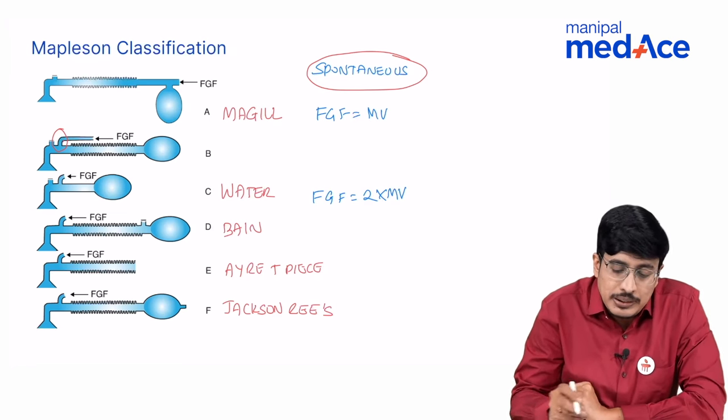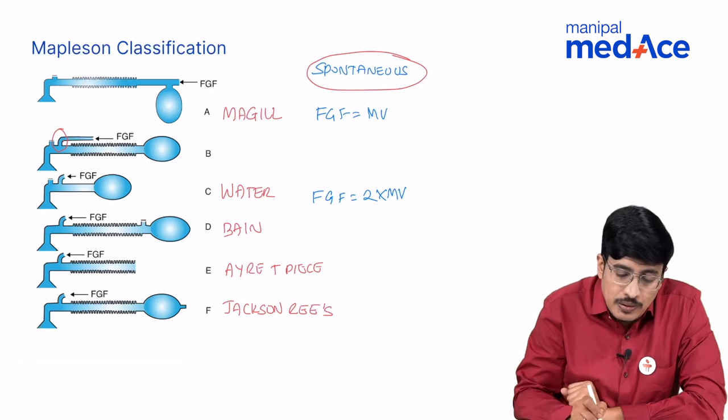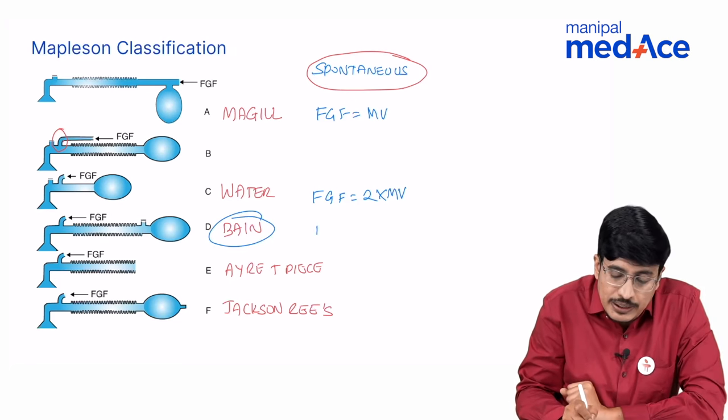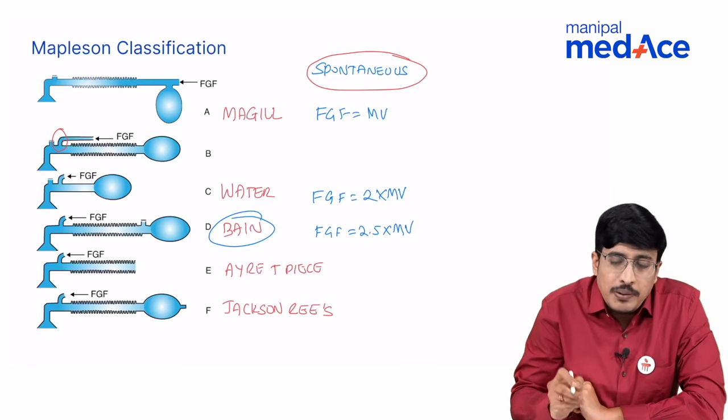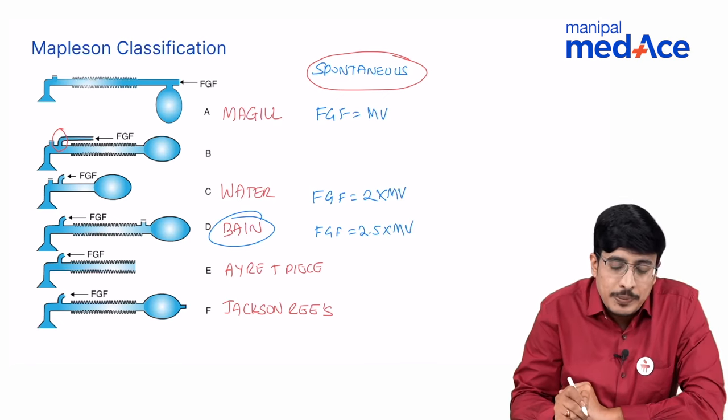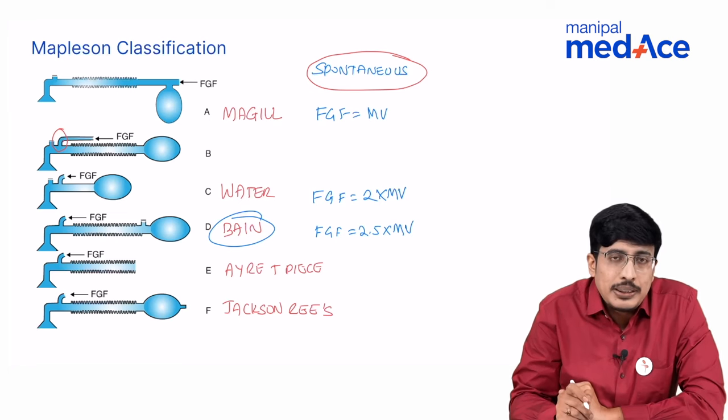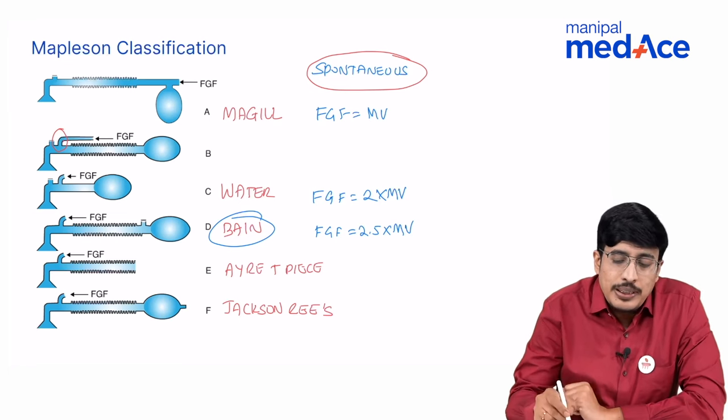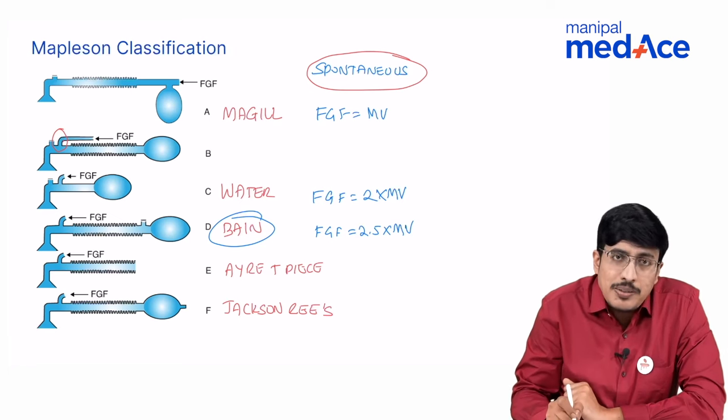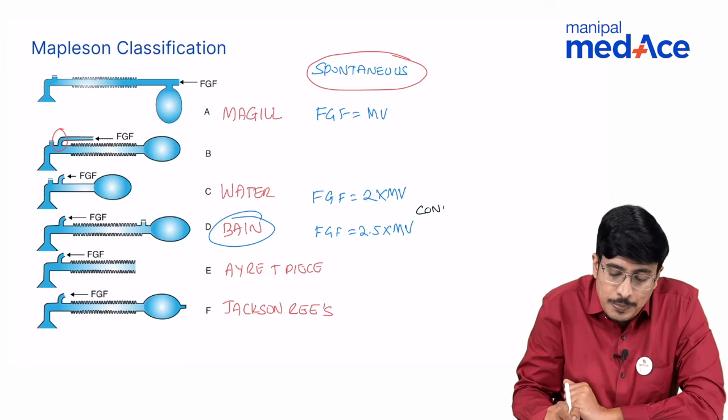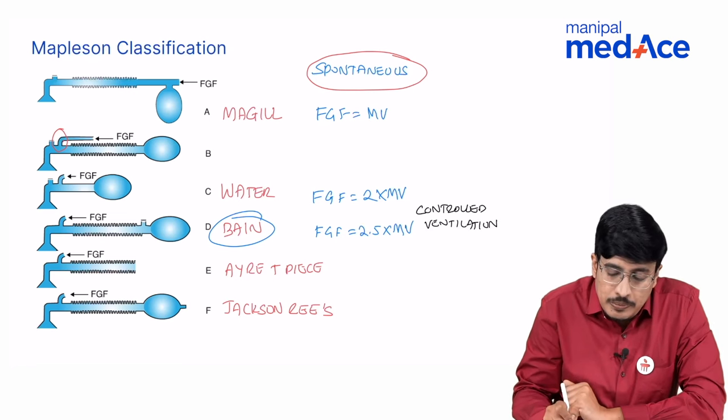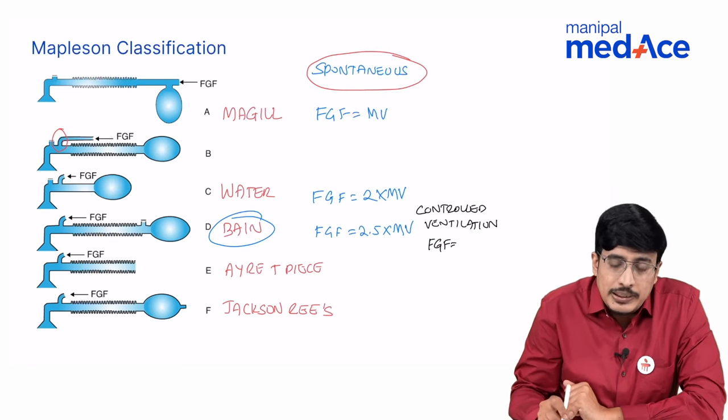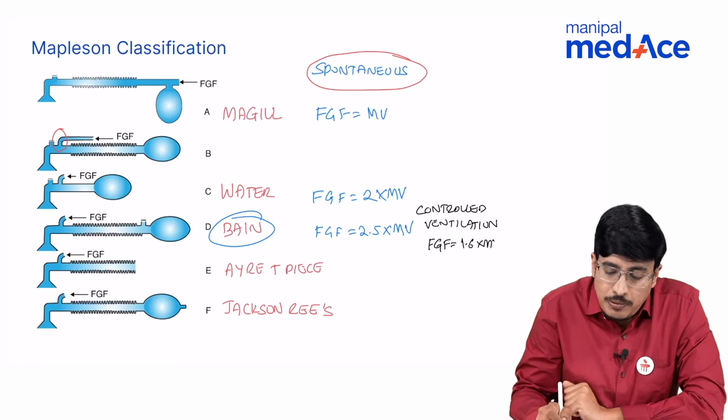The circuit that we commonly use is Bain circuit. Here the fresh gas flow is two and a half times the minute volume when the patient is breathing spontaneously. It can be used for a patient who is breathing spontaneously. Also it is the circuit of choice for controlled ventilation. The fresh gas flow when it is controlled ventilation is 1.6 times the minute volume.